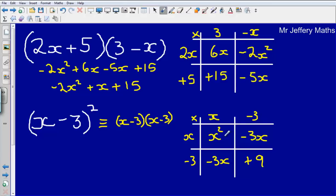Just be very careful when you're doing this that you're evaluating these correctly, paying particular attention to the negative signs that are involved. So we've got x squared minus 3x minus 3x plus 9.